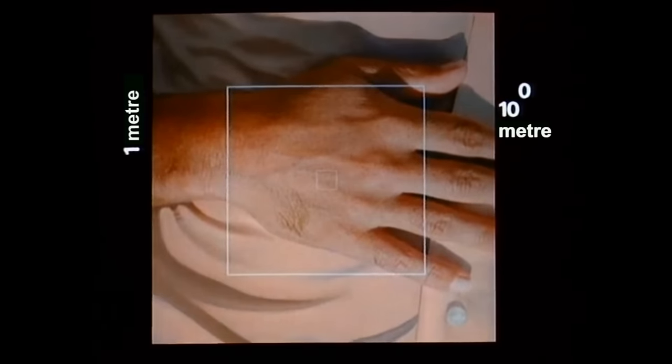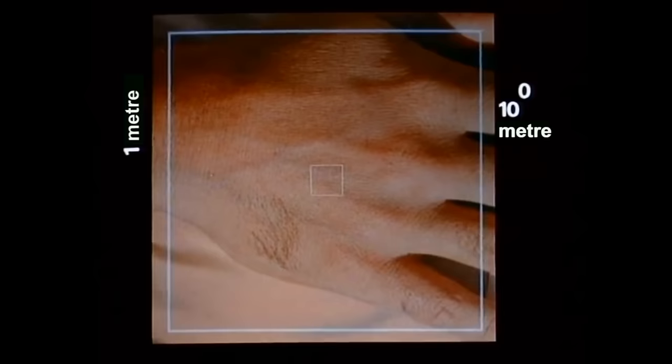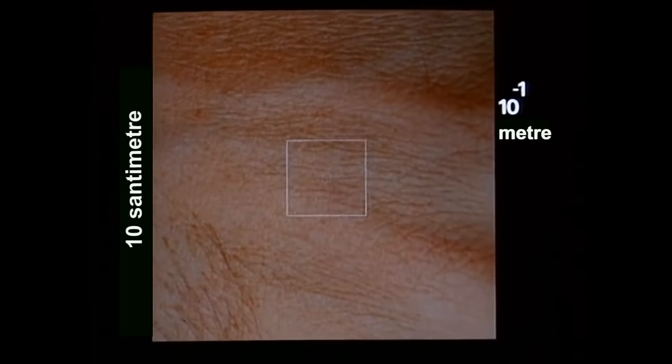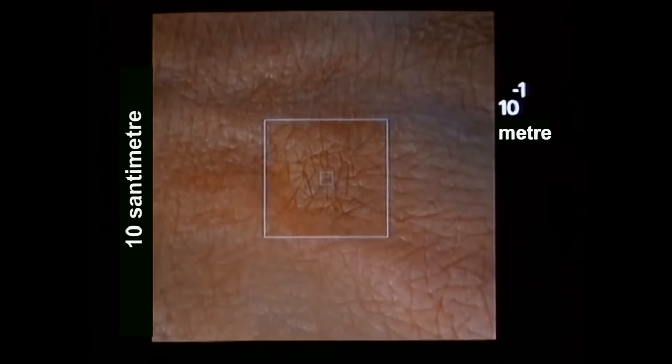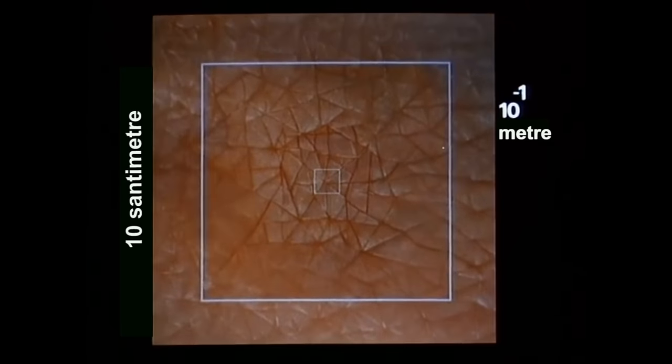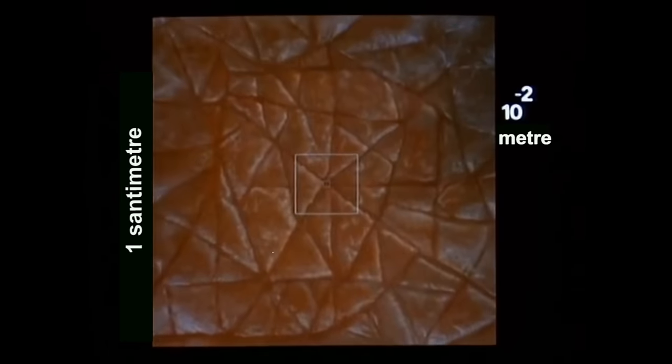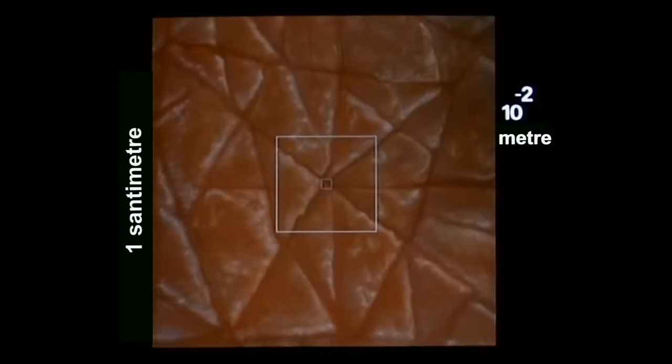Şimdi varış noktamıza olan uzaklığı her 10 saniyede %90 azaltıyoruz. Her adım bir öncekinden çok daha küçük. Onun eksi ikinci kuvvetinde, metrenin %1'inde yani 1 cm'de elin yüzeyine yaklaşıyoruz.